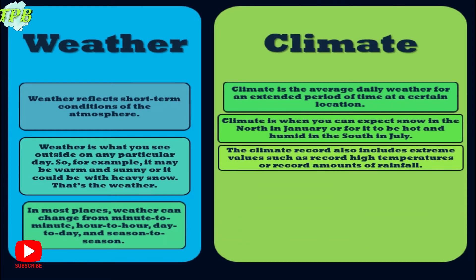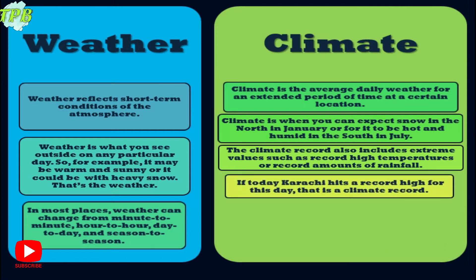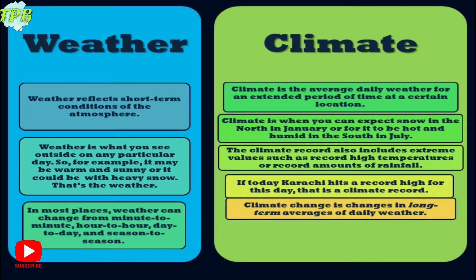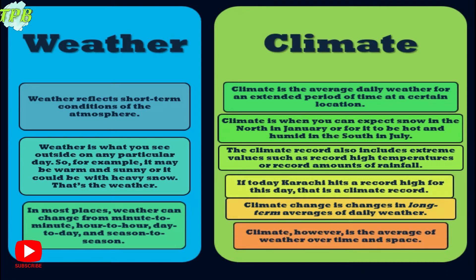The climate record also includes extreme values such as recording of high temperatures or recording of amounts of rainfall. If today Karachi hits a record high for this day in temperature or rainfall, that is a climatic record. Climate change is changes in long-term averages of daily weather. Climate, however, is the average of weather over time and space.